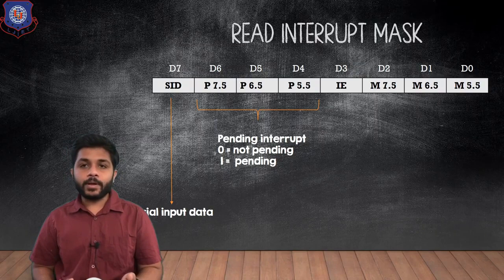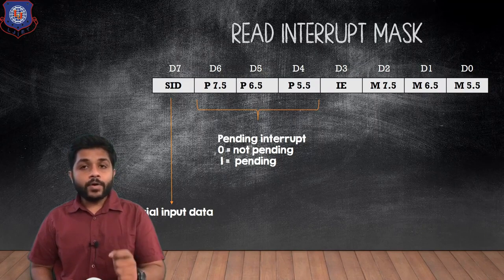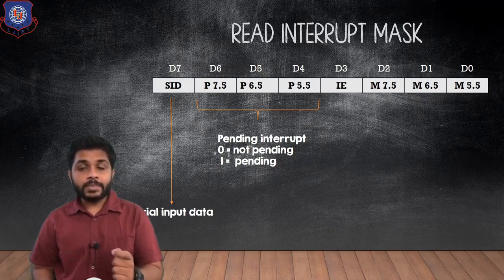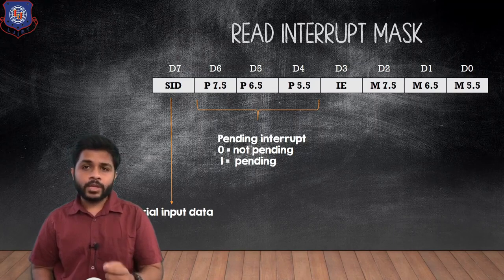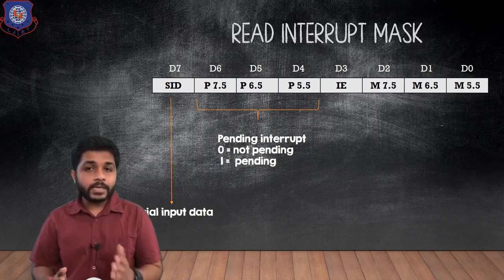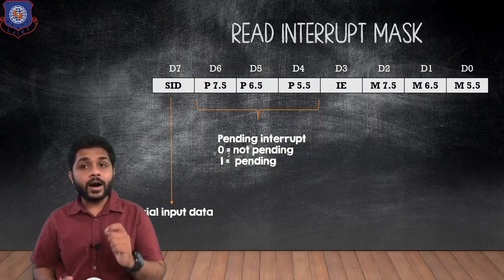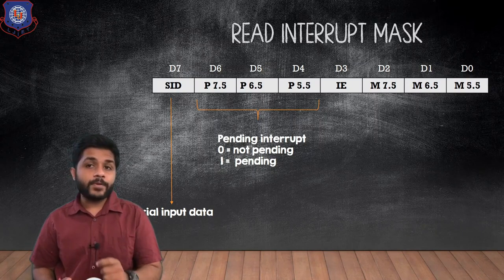For example, if the value of the D5 bit is 0, it means the RST 6.5 interrupt is not pending. If the value of the D4 bit is 1, it means the RST 5.5 interrupt is pending.